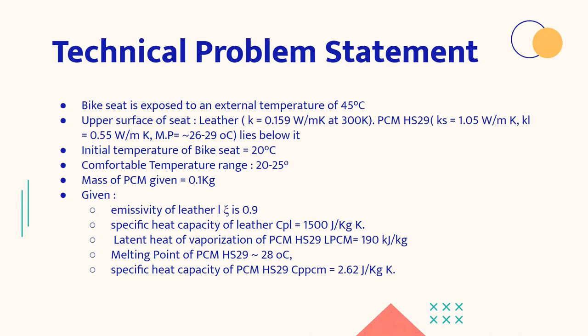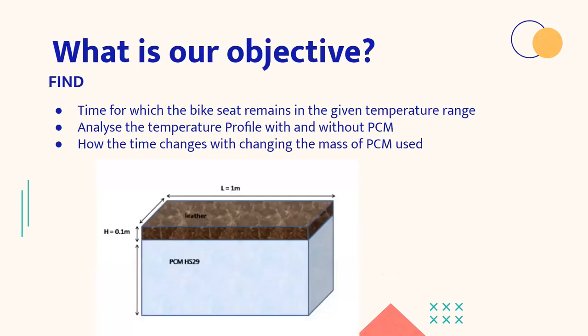So here is a technical problem statement and further we look at what we need to find using this data and this problem statement. Firstly, we need to find the time for which the bike seat remains in the given temperature range of 20 to 25 degrees Celsius. Secondly, we need to analyze the temperature profile with and without PCM. And thirdly, we need to find how the time changes with changing the mass of PCM used. So we have taken a particular mass of PCM and for that, we are finding out the time required for the PCM to melt fully.